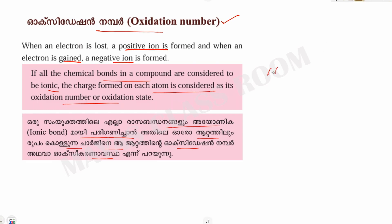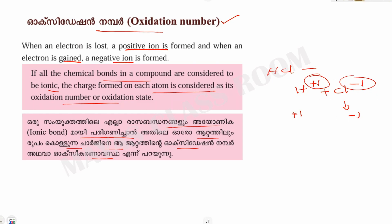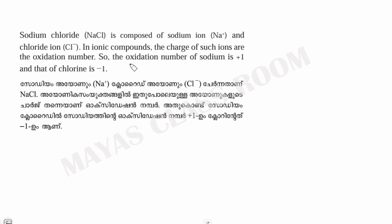Let's take HCl as an example. HCl equals H plus 1 and Cl minus 1. For ionic compounds, the charge gives the oxidation number. So the oxidation number of sodium is plus 1 and chlorine is minus 1.